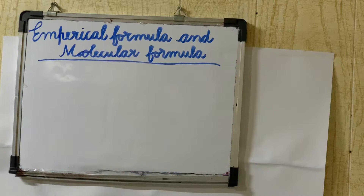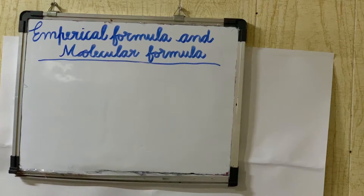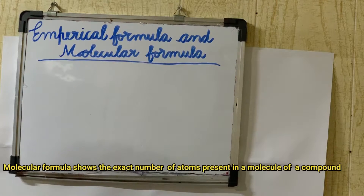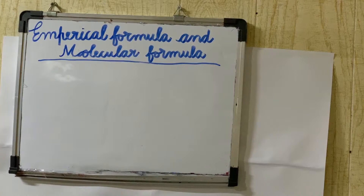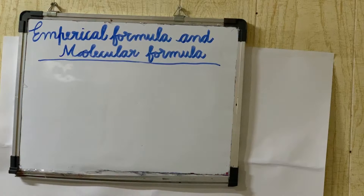What is the difference? If we have an empirical formula, we have a compound where the lowest whole number ratio represents the empirical formula. If we have a molecular formula, we have a compound with the actual number of atoms. In the empirical formula, we have a simplified formula.